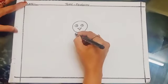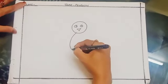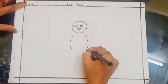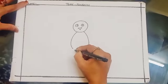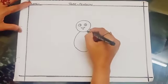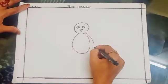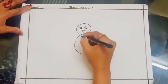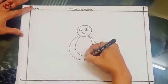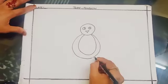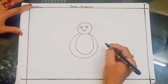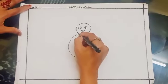Inside draw a letter U like this way. Then draw one more circle for the body.